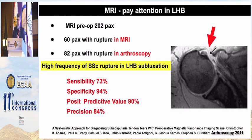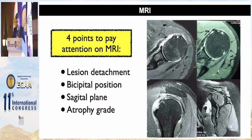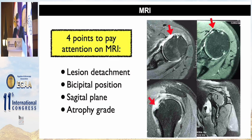On MRI, pay attention to the biceps — there is a high frequency of subscapularis rupture when the biceps is subluxated. There are four key points to assess on MRI: the lesion detachment, the bicipital position with subluxation of the biceps, the value in the sagittal plane, and the atrophy grade.